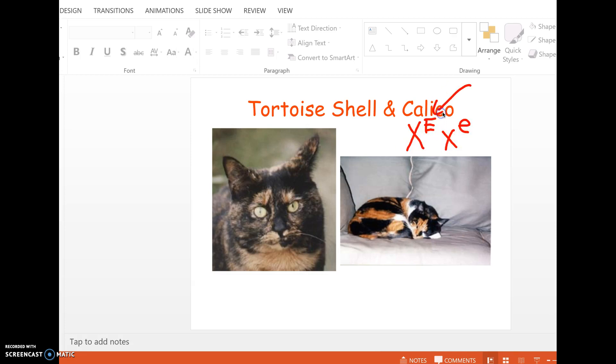You have to have a copy of the gene that codes for black fur and a copy of a gene that codes for yellow fur. But remember, males are XY. So they can either be X big E black, or they can be X little E yellow. But either way, they can't be tortoiseshell or calico because they can't have two Xs. Males only have one.